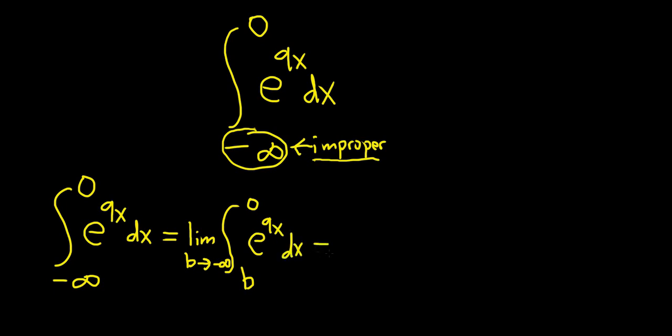This is equal to, and now we can integrate. So when you integrate e^(9x), you just divide by 9. It's just a simple u substitution. So we'll write it again. Limit as b approaches negative infinity. This will be e^(9x) divided by 9. And we're going from b to 0.